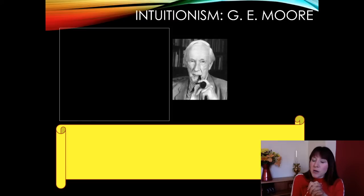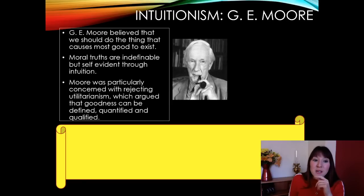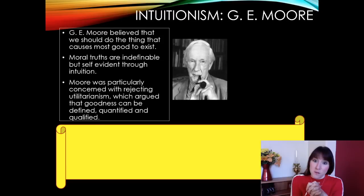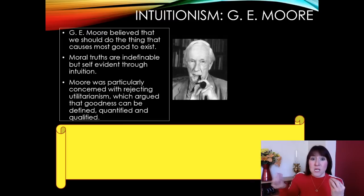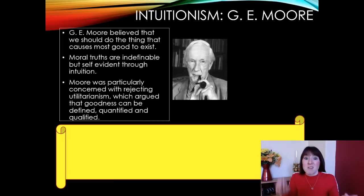Intuitionism — the main name is G.E. Moore. He believed we should do the thing that causes the most good to exist. Moral truths are indefinable but self-evident through intuition. Moore was particularly concerned with rejecting utilitarianism, which argued that goodness can be defined, quantified, and qualified. He says you can't define moral truths — you just know them; they're self-evident. He rejects the hedonic calculus's attempt to quantify happiness or qualify higher and lower pleasures — you simply cannot do this.